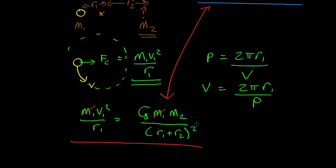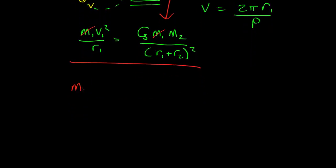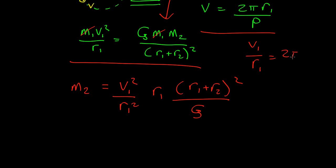Let's rearrange this to get M2. So, we get that M2 is V1 squared over R1 squared times R1. What I've done is I've multiplied top and bottom by R1 for reasons to become clear in a moment. R1 plus R2 squared over G. But we know that the velocity is given by this, so we know that V1 over R1 equals 2 pi over P. So, we can substitute that into here. That's why I put the squared on both sides. We just squared the entire thing. And so, we find that M2 is 4 pi squared over G times the period squared R1 R1 plus R2 squared.